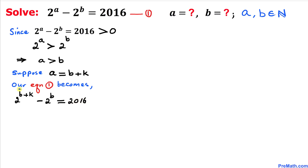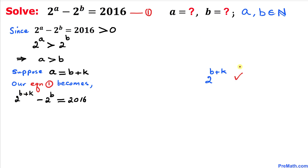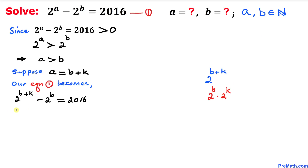Now focusing on 2 power (b plus k), using the product rule of exponents, we can write this as 2 power b times 2 power k. So the equation becomes 2^b times 2^k minus 2^b equals 2016.